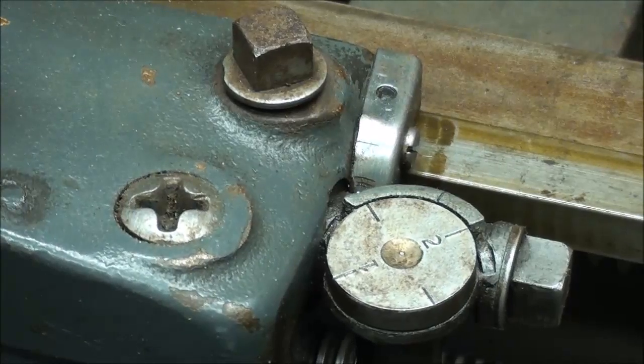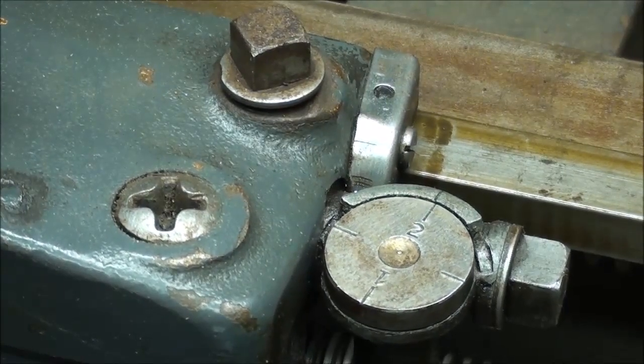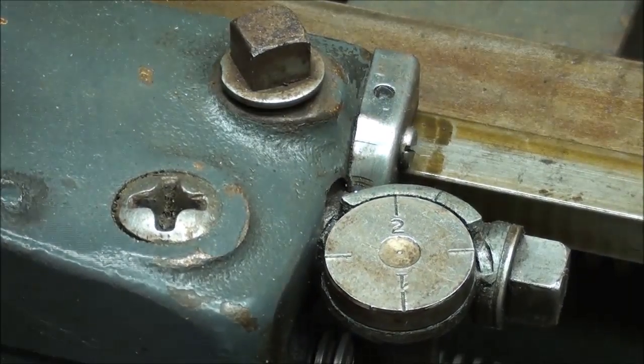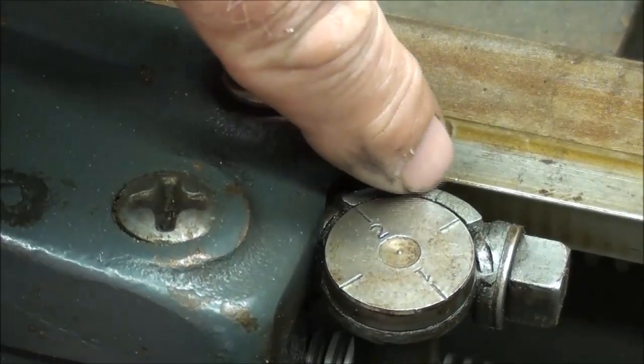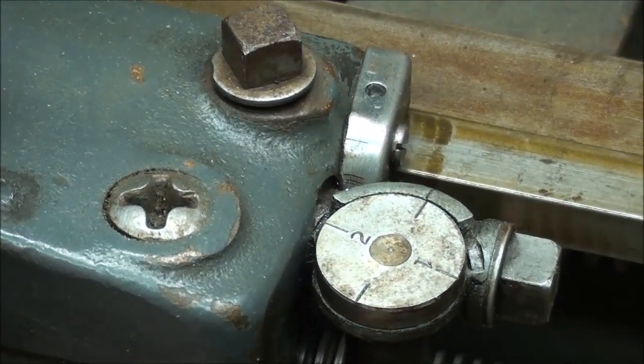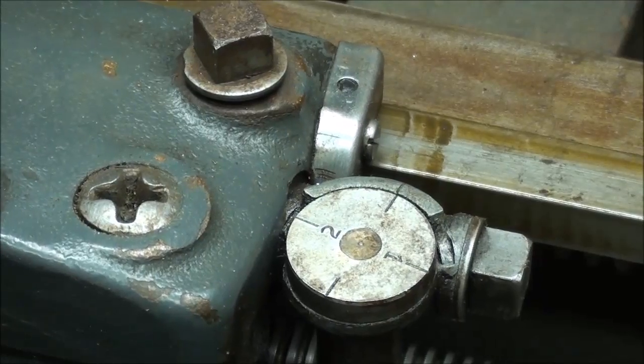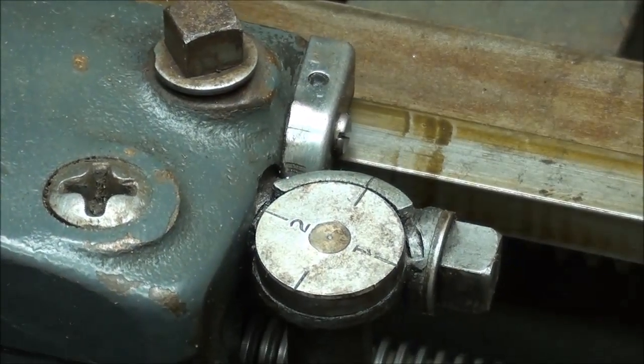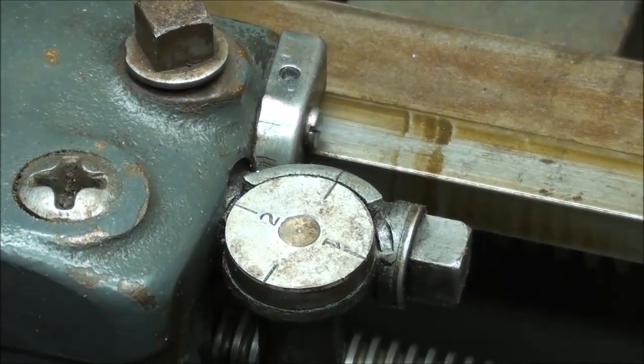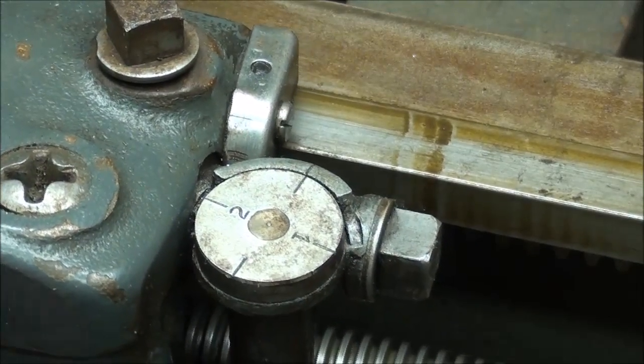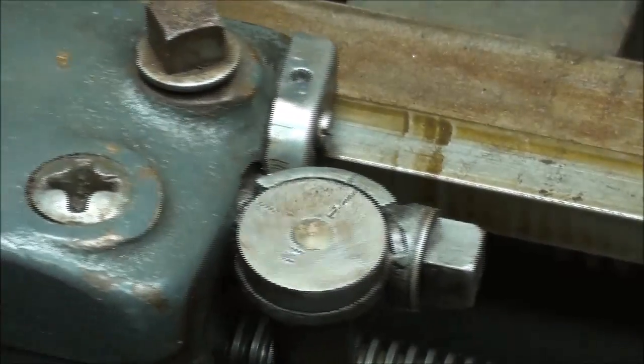Moving closely into it, when we are threading, we move the half nut lever such that the little index line here lines up with one of the lines on the dial. We'll talk more about that later on when we talk about threading. But that's the purpose of the threading dial.